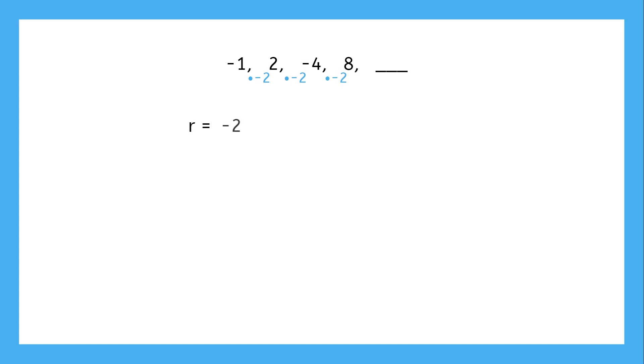So the common ratio is negative 2. Any time the common ratio is negative, the terms will alternate between negative and positive. So what's the next term? The 5th term will be the 4th term times negative 2, which is negative 16.